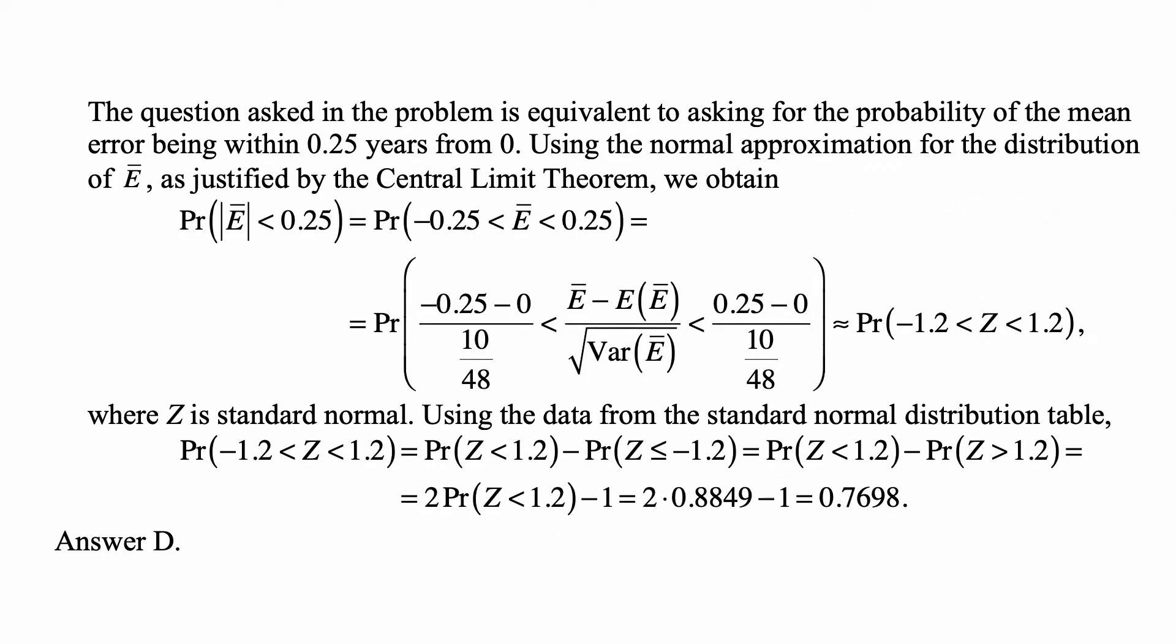So the question asked in the problem is equivalent to asking for the probability of the mean error being within 0.25 years from 0. We are using the normal approximation for the distribution of E-bar as justified by the central limit theorem, because E-bar is an average of independent, identically distributed random variables, 48 of them. So probability that E-bar is less than 0.25 is the probability that E-bar is between negative 0.25 and 0.25, and by central limit theorem, E-bar is approximately normal.